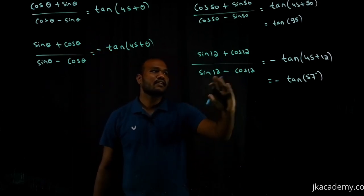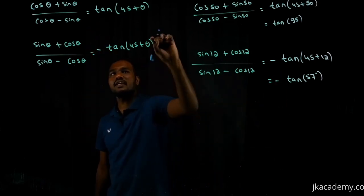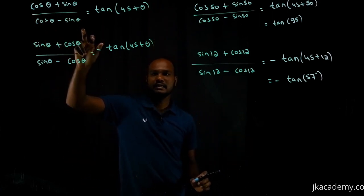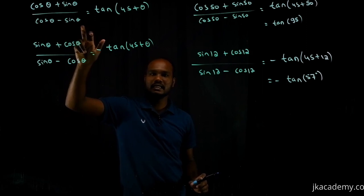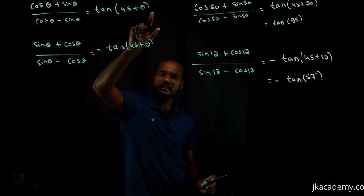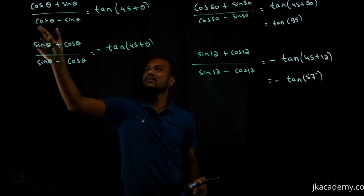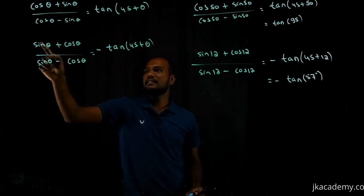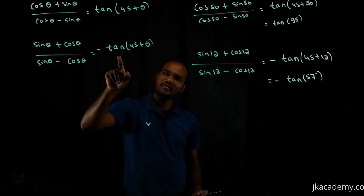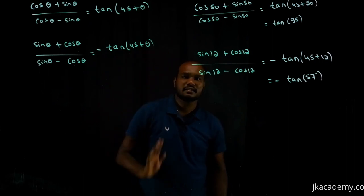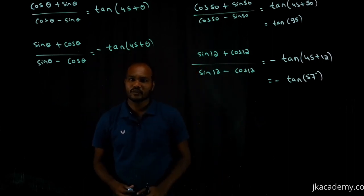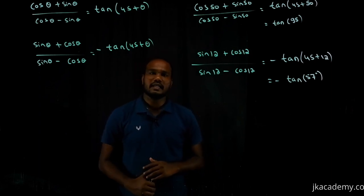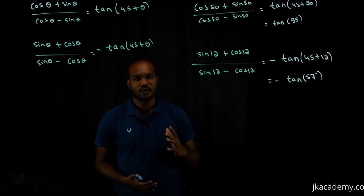Can you learn this formula when you see it and directly write the answer? Cos sine cos sine — tan of 45 plus theta. Cos sine cos sine — tan of 45 plus theta. Sin cos sin cos — minus tan of 45 plus theta. In the next part of the video we'll watch some more important questions.